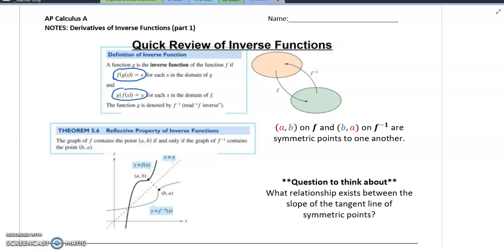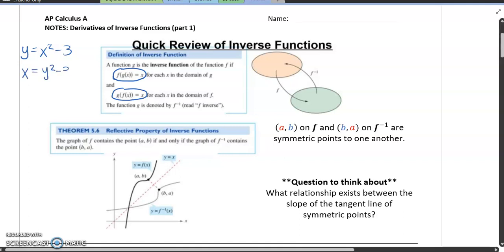Another notion, another quick notion for most people is, if you have an equation like y equals x squared minus 3, the quickest way to be able to find the inverse is quite simply just switch the variables around, and that's essentially going to create your inverse. So these two functions that you're looking at on the screen, those will be considered inverses.